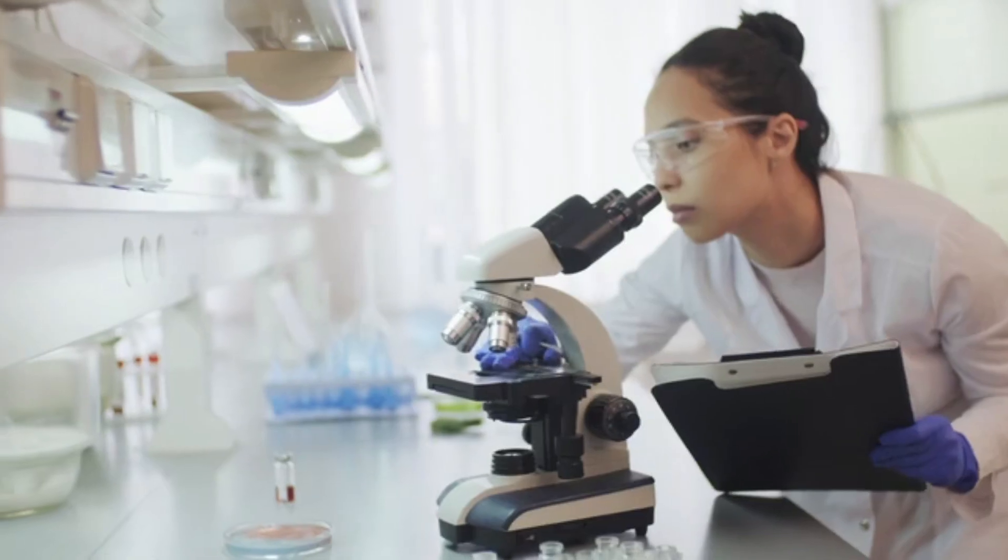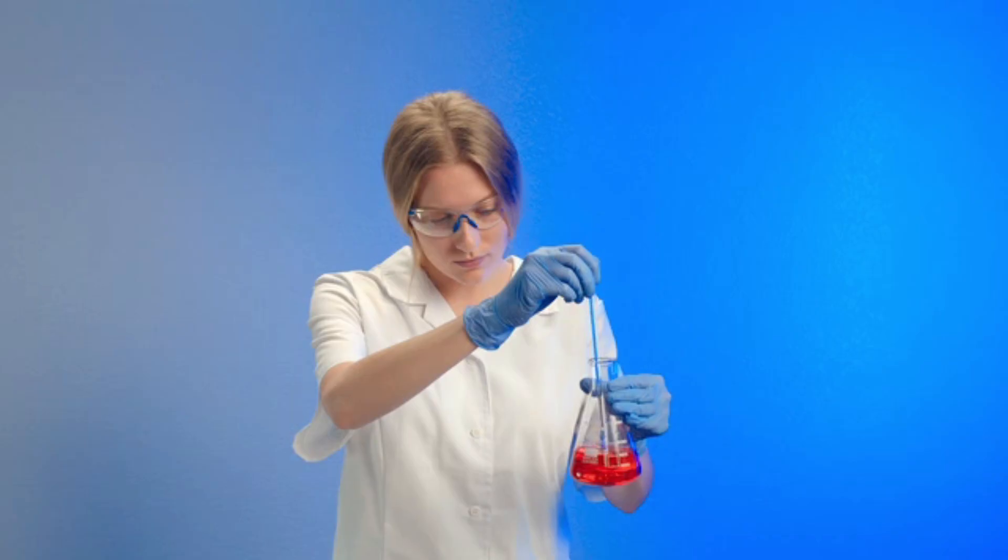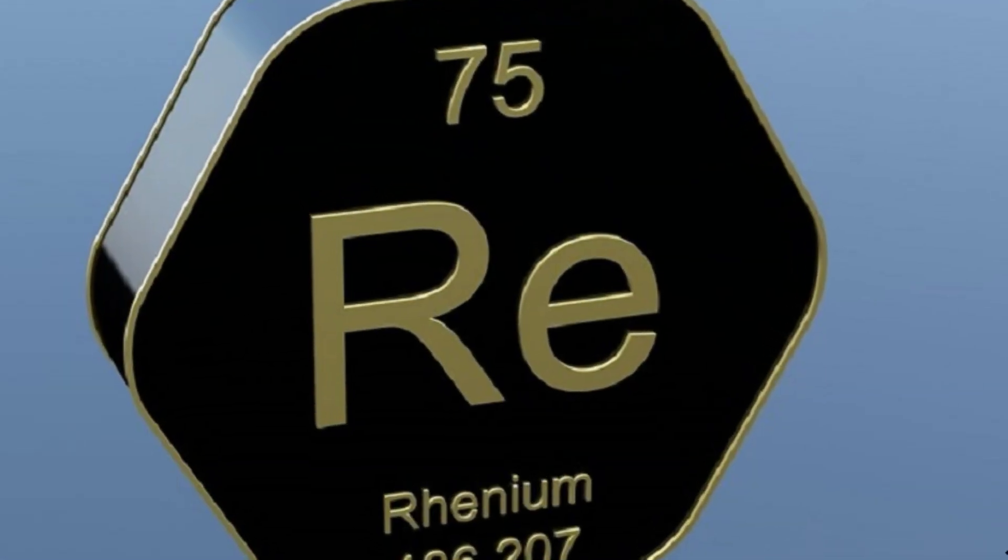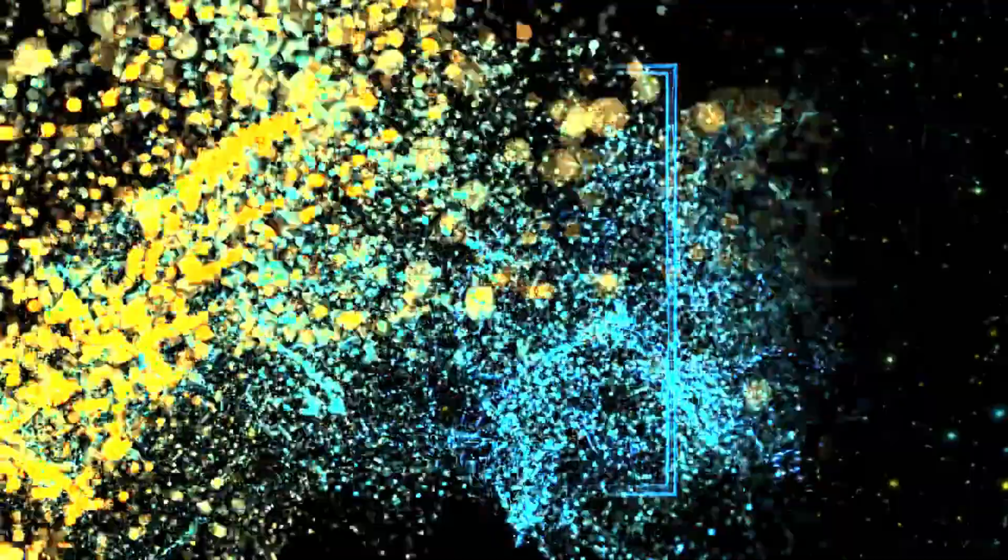Ida Nodak, a pioneering female chemist, co-discovered rhenium and made significant contributions to the field of chemistry. Walter Nodak, along with his wife Ida, played a crucial role in identifying rhenium and studying its properties. Otto Berg, another key figure in the discovery of rhenium, worked alongside the Nodaks in the early exploration of this element.